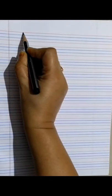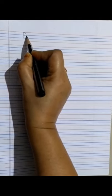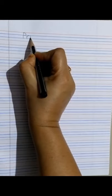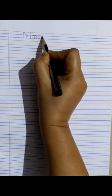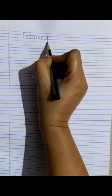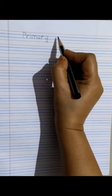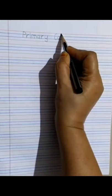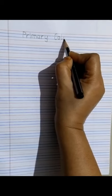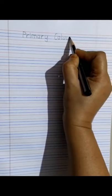First we will write primary colors. Write a capital P, then a small R, then I. Primary: M, A, R, and Y. Can you see I am writing between the red and the blue lines? Then from the red line again a big C, an O between the blue lines, then an L from the red line to the blue line, and O again, a U between the blue lines, an R and an S. Primary colors.